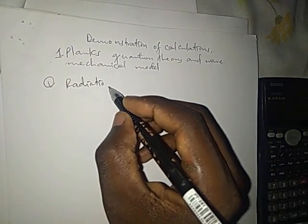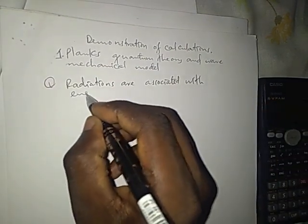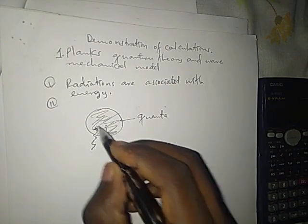The first postulate of Planck's quantum theory states that all radiation are associated with energy. The second postulate states that radiant energy is not emitted or absorbed continuously, but in the form of small packets of energy called quanta. So according to Planck's proposal, these quanta contain radiant energy, and radiant energy can be emitted or absorbed by a quantum.